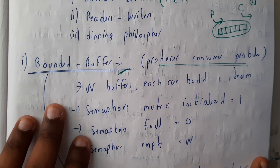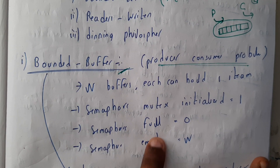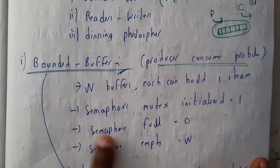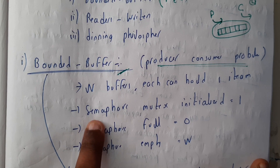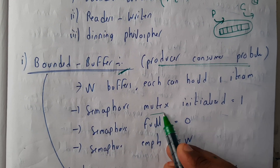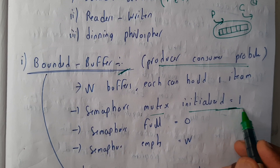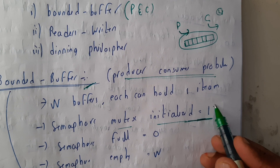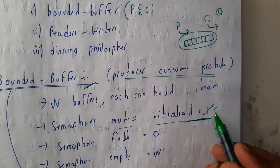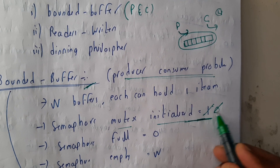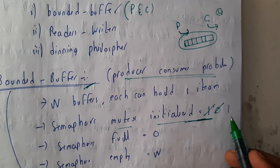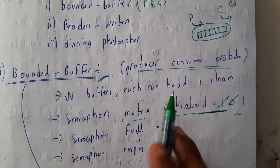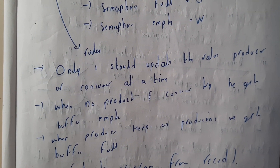We will be using different variables: semaphore full, semaphore empty, and semaphore mutex, initialized with one — because if it is one it is free, if it is zero it is locked, and if it is one again it is free. We will also be using an integer variable n for the buffer size.